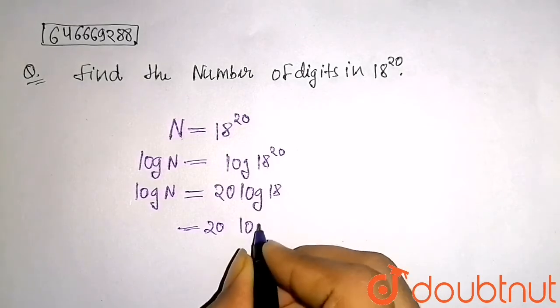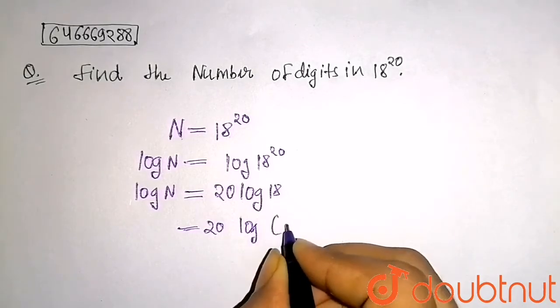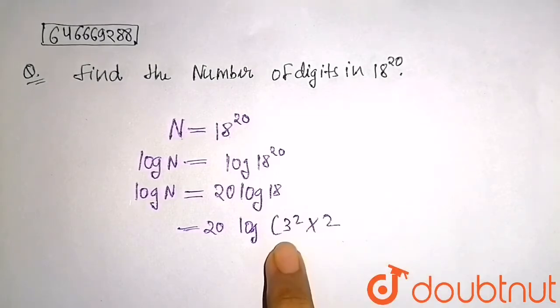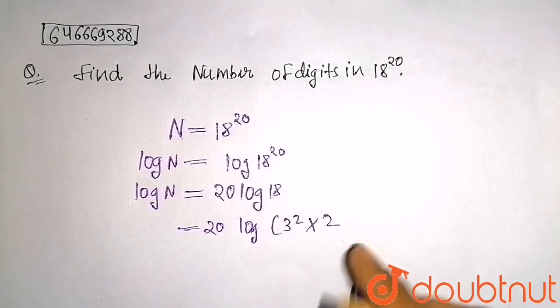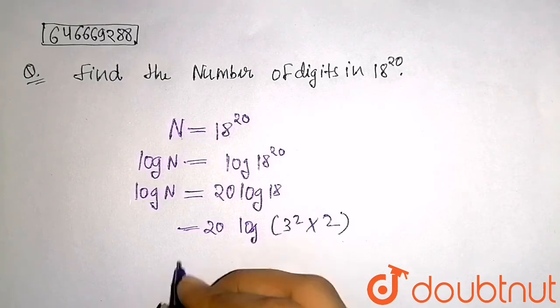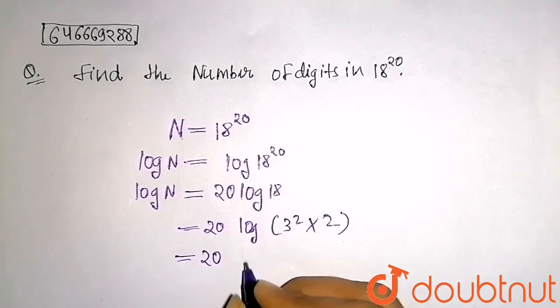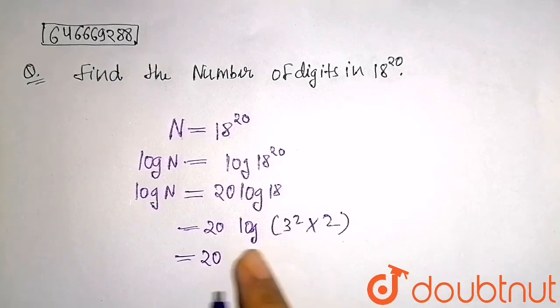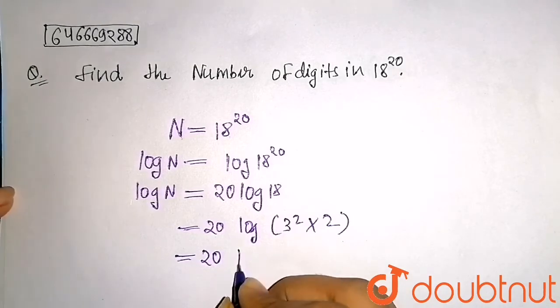So I can write like this so that it will be easy to solve: 20 times [log(3² × 2)]. Now we know that log(a × b) can be written as log a + log b. So this becomes 20[log 3² + log 2].